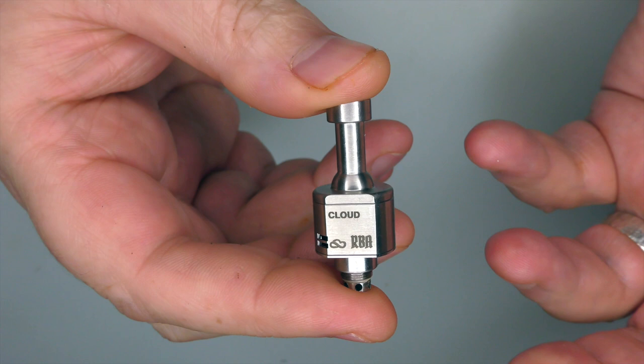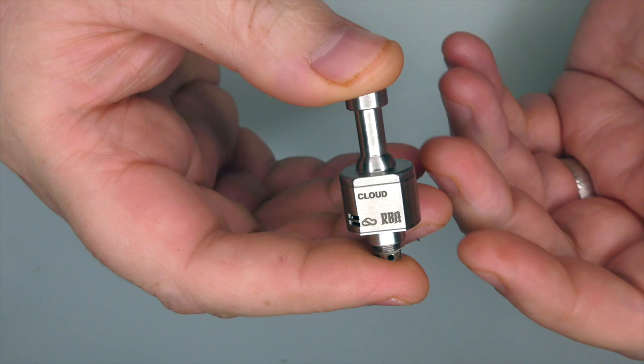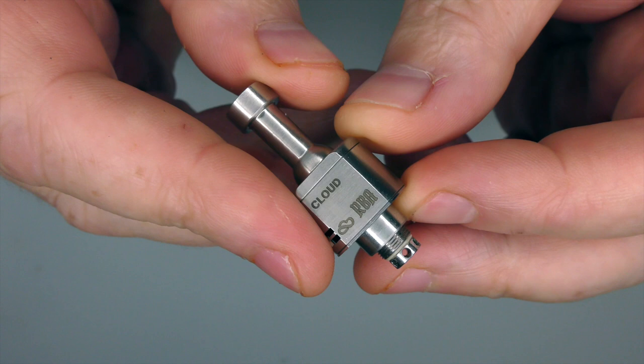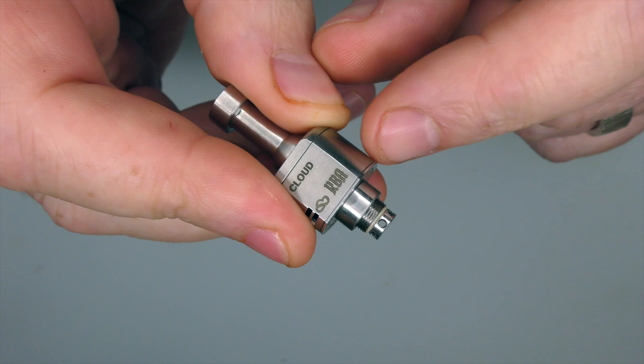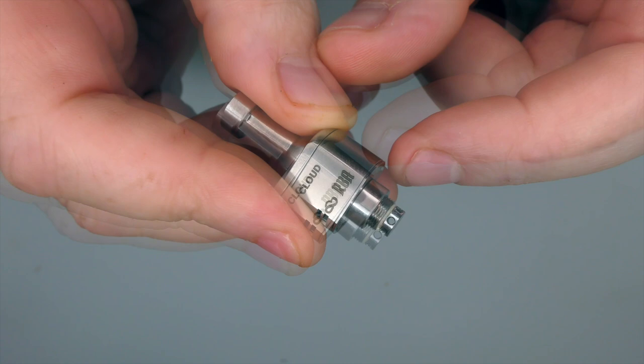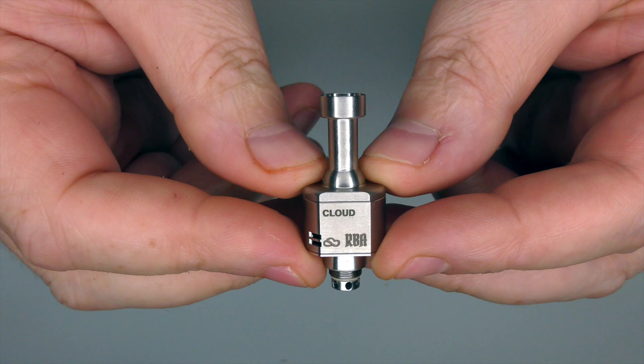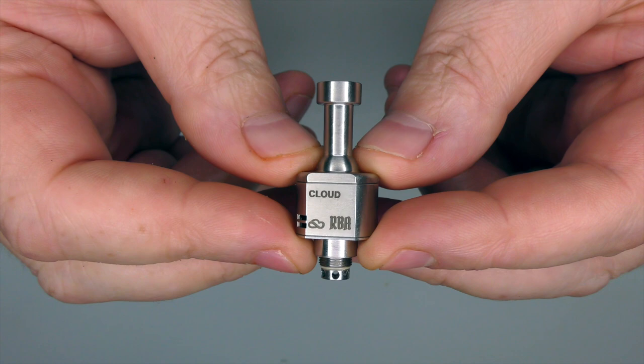This goes inside your borrow tank and then you pop it inside the billet box or whatever borrow mod you're using. One of the things I like is the fact that it comes with a 510 thread on the bottom so there's no hunting about for adapters. You stick this inside your borrow tank and given the size you'll still be left with about 4.2mm capacity on your standard borrow.